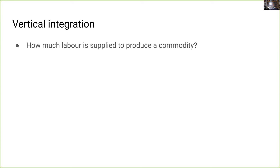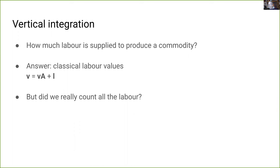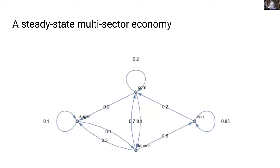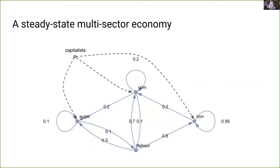This final form shows classical values as the sum of living labor supplied to production plus the value of the means of production which gets transferred to the output — corresponding precisely to Marx's definition in Capital. So returning to our original question: the answer for classical labor values is v = vA + l. But did we really count all the labor? Actually we didn't — we missed some, as we'll now see. This picture doesn't tell the whole story.